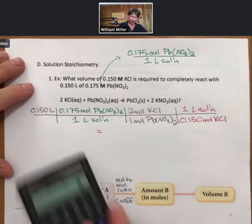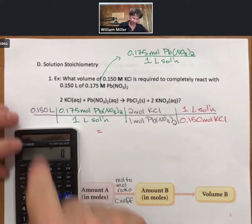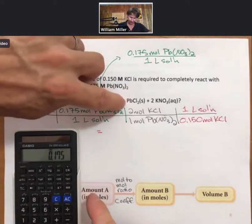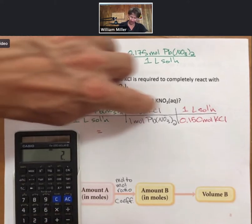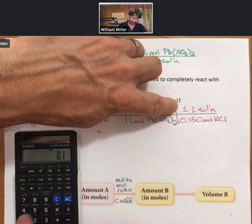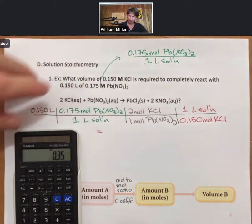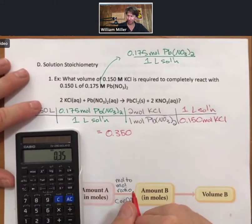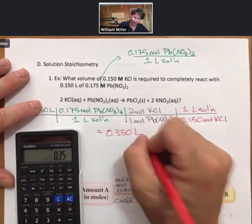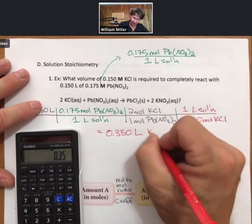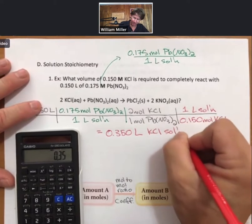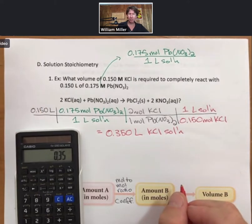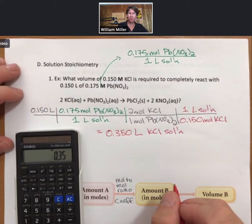Multiplying this out, I have 0.15 times 0.175 across the top, times 2 divided by 0.150, 0.350 to 3 sig figs, liters. And I'll be careful here. I do have two solutions. It is liters of potassium chloride solution that I'm looking for here. Very typical example of solution stoichiometry.